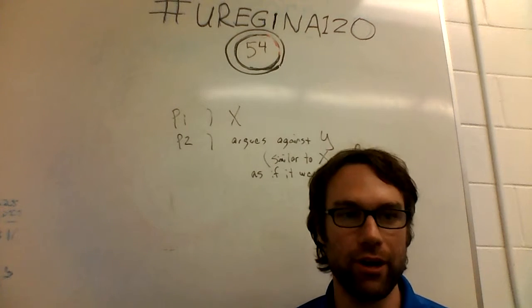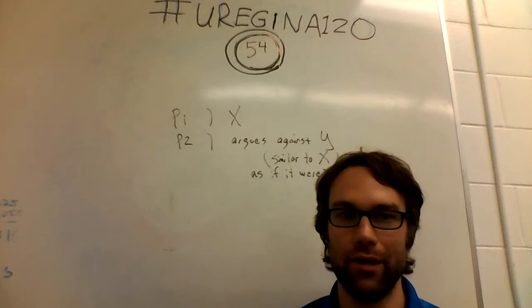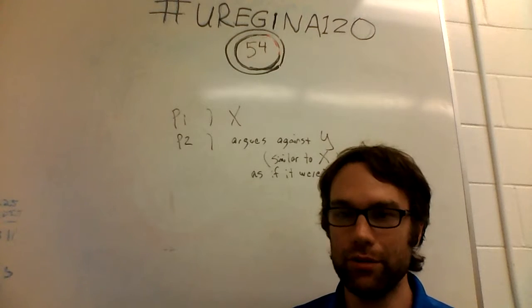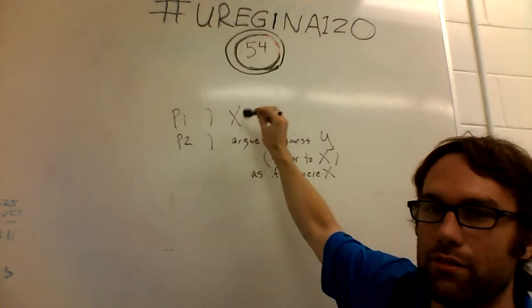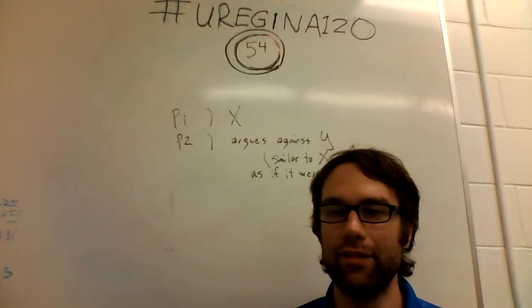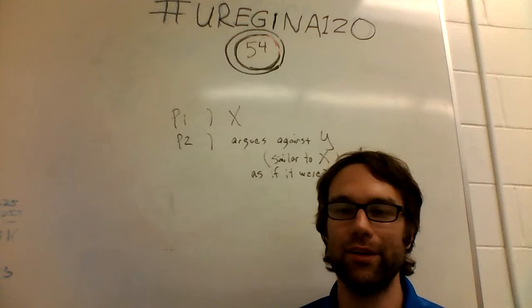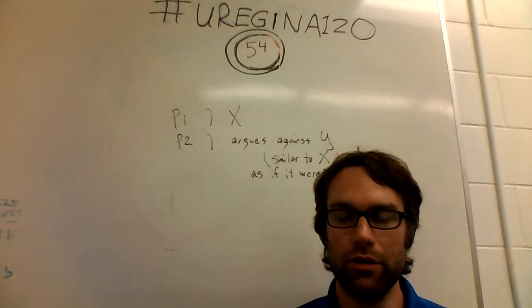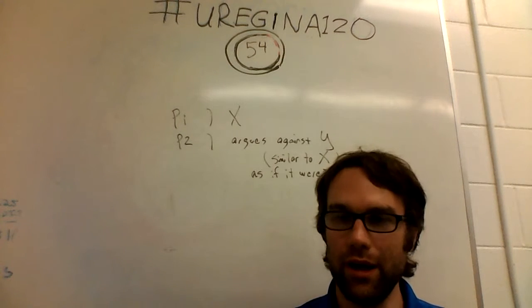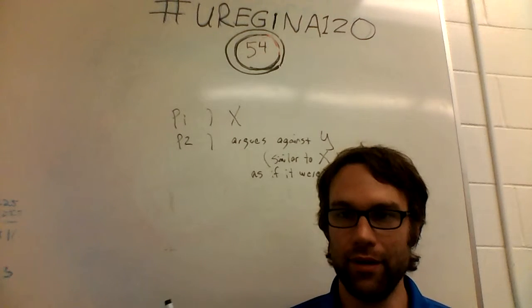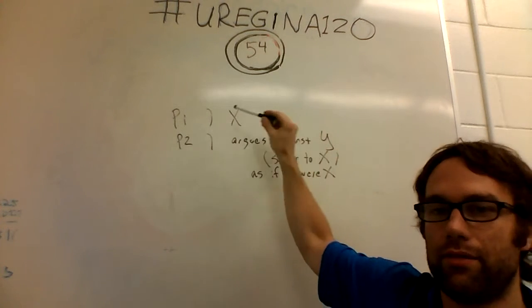It's related to the Ignoratio Elenchi video, in that you're proving a conclusion, Y, that is not necessarily the conclusion in question, X, or its negation. So, again, go back to that video. Go take a look at how that fallacy rolls out in practice. But, again, you're proving some conclusion, and it has nothing to do with the matter at hand, i.e., the disagreement on matters of X.